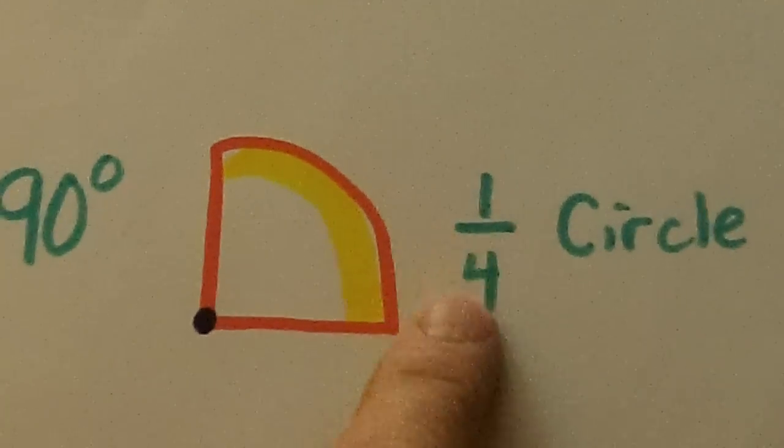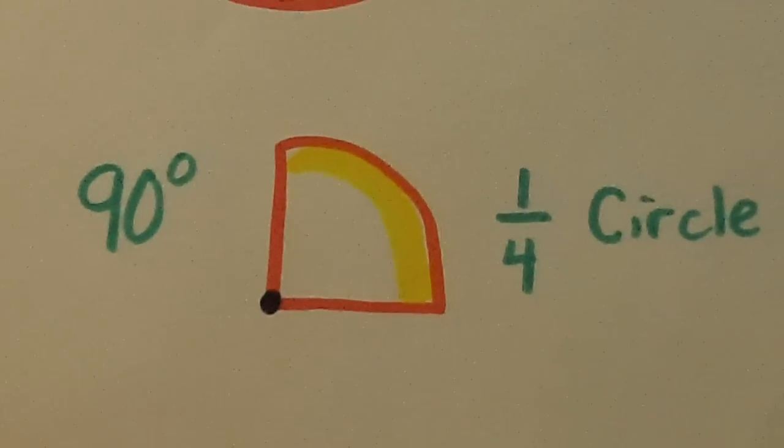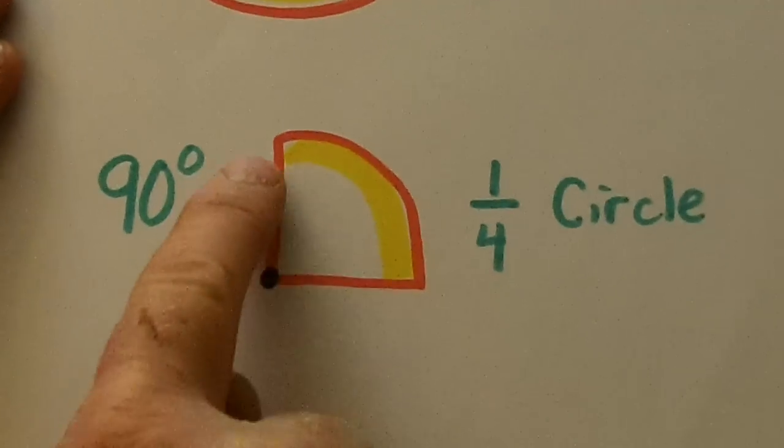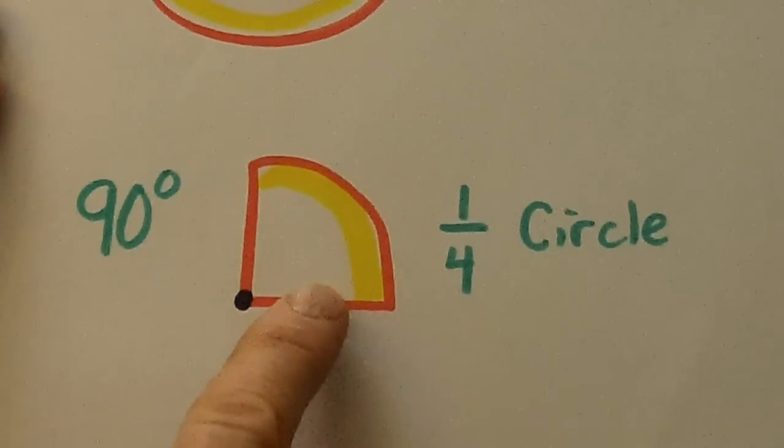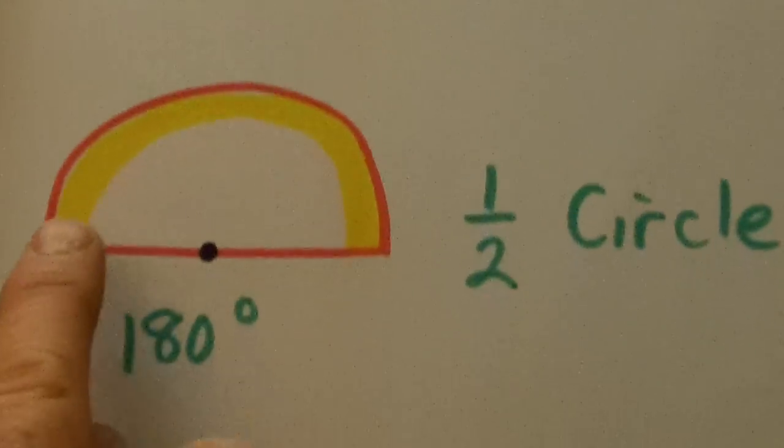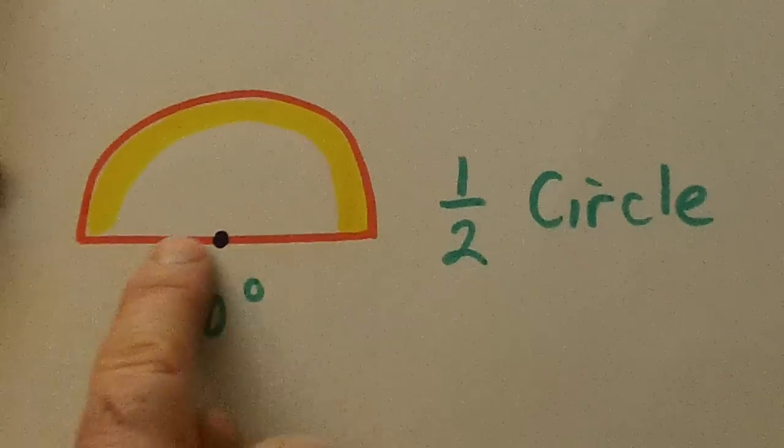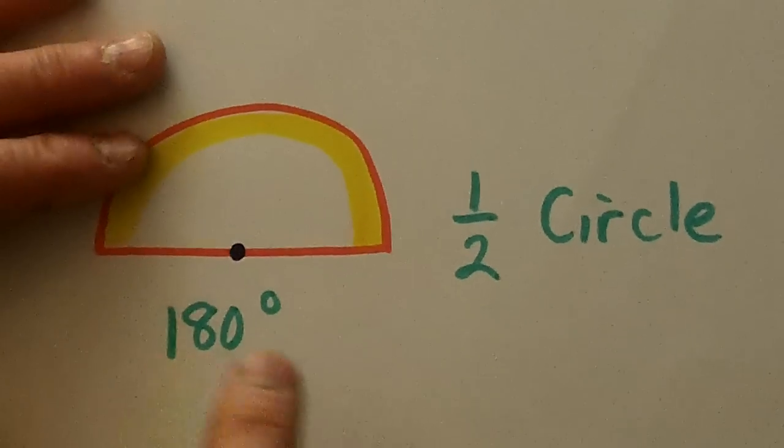So if we work with a one-fourth circle, or what adults call a quarter circle, this right here is 90 degrees, and if we work with a half circle, it'll be 180 degrees.